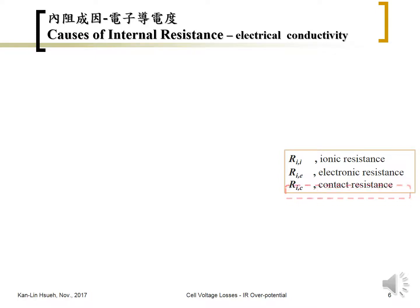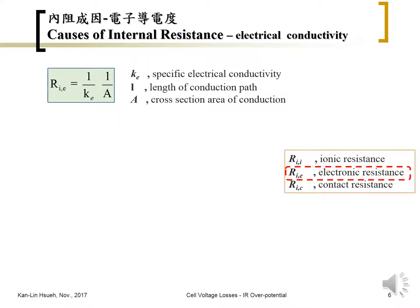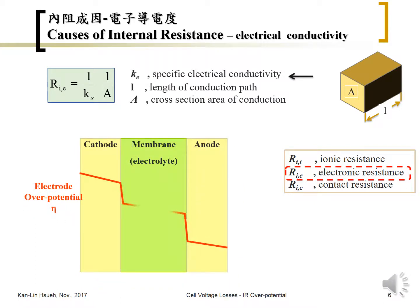The electronic resistance can be calculated by this equation: R = L / (σ × A), where σ is the specific electronic conductivity of the material, A is the cross-sectional area, and L is the length of the conducting path — for example, a rectangular block of metal. This applies to both the cathode and the anode. For porous materials, one must also consider porosity and tortuosity.